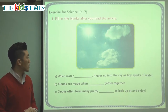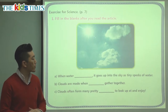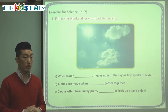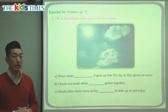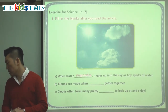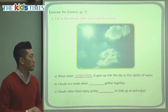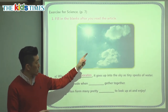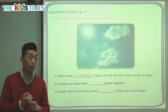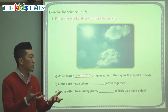Let's look at the first question. We can see some clouds in a nice blue sky. It says: when water something, it goes up into the sky as tiny specks of water. We've been talking about this long word — when water goes up and changes from water into very small pieces, it evaporates. So when water evaporates, it goes up into the sky as tiny specks. Those clouds came from the ground after water evaporated from rivers, lakes, the ocean, and even puddles.